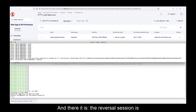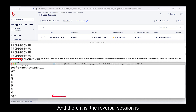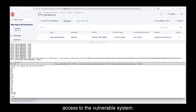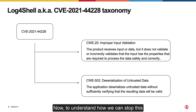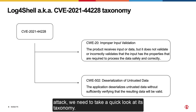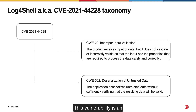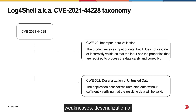And there it is — the reverse shell session is connected and I can check that I gained access to the vulnerable system. Now, to understand how we can stop this attack, we need to take a quick look at its taxonomy. This vulnerability is an instance related to two generic types of weaknesses: deserialization of untrusted data and improper input validation.